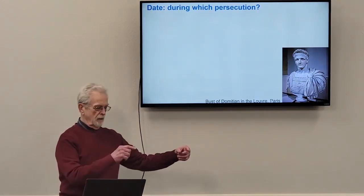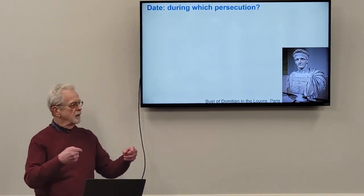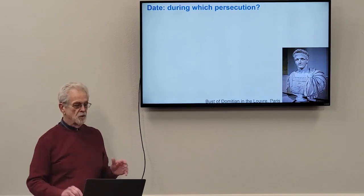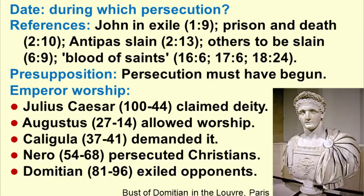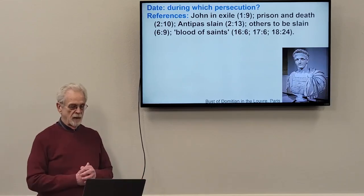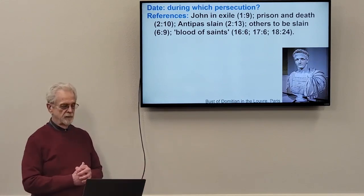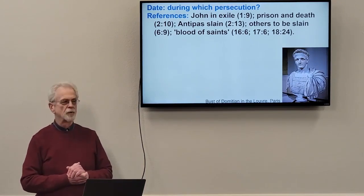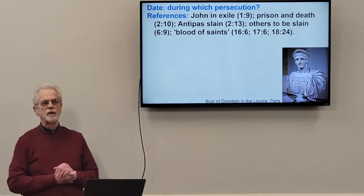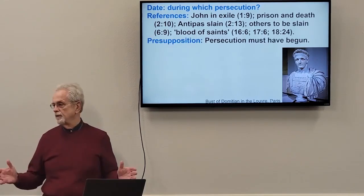When was this written? The introduction says "from John, your brother, and you share in the persecution." What persecution was he talking about? Would that help us date the book? There are persecutions mentioned: John himself said he was in exile, he mentioned prison and death, that one Christian named Antipas had been slain in Pergamos, others were going to be slain for the faith, and there are several mentions of the blood of the saints. This probably was not written in the earliest decades after Jesus.